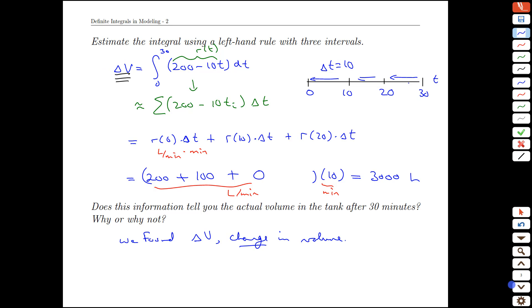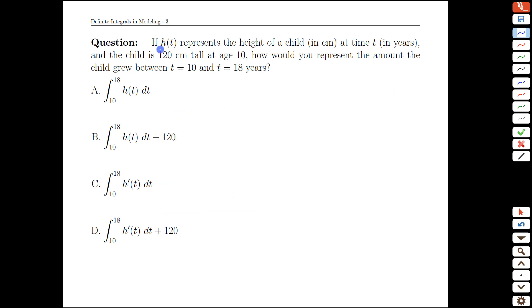Let's take a look at a second example. In developmental physiology, one function that's of interest is the height of a child as they grow. Here we're going to record it in centimeters at time t in years. We're also told that the child is 120 centimeters tall at age 10.